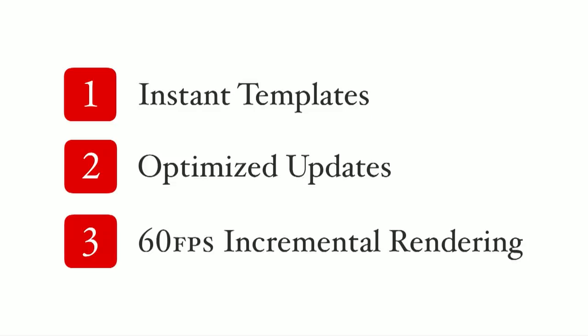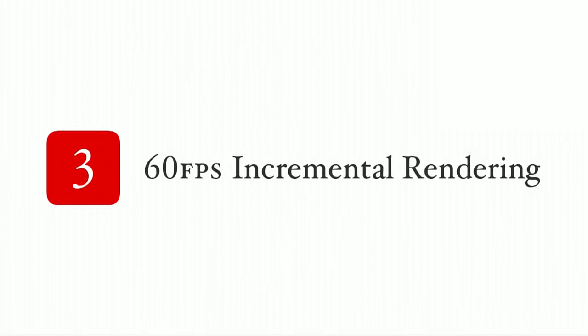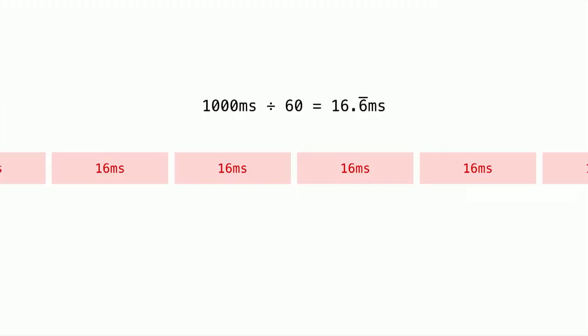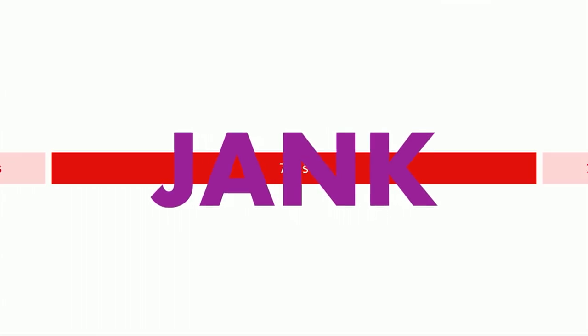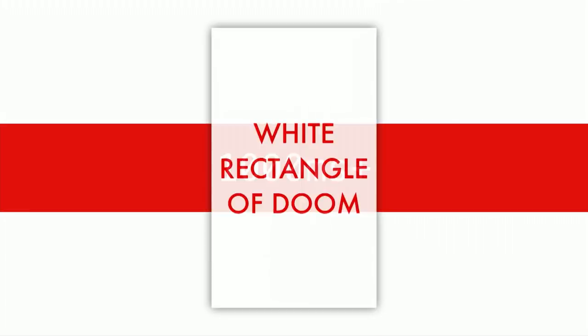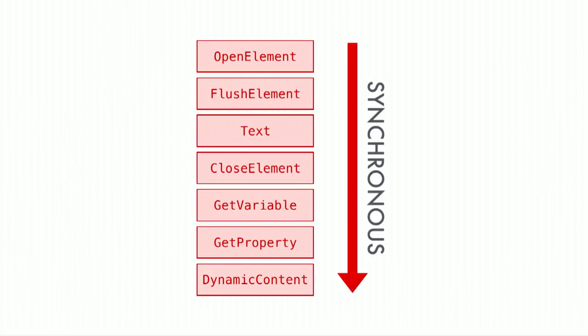So that's optimized updates with partial evaluation. Now let's talk about our last item: 60 frames per second incremental rendering. Your browser moves things around the page frame by frame. For the smoothest experience, you want your browser to draw 60 frames per second. Unfortunately, 16 milliseconds isn't a whole lot of time. If we spend more than 16 milliseconds at a time on JavaScript — say 70 milliseconds — our users experience jank, that unpleasant stuttering unresponsiveness. The most expensive frame is usually the very first one where we're drawing the whole DOM, which causes the white rectangle of doom — a white screen for 10 seconds, which is what we saw in the first Wikipedia stress test. Most libraries render your entire component hierarchy synchronously, top to bottom, without letting the browser do anything in between.